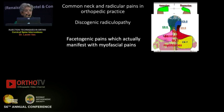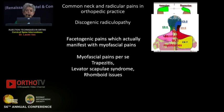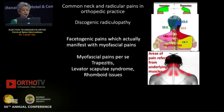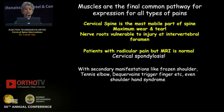These things I have discovered from my experience with patients, though this is what is written in textbooks. Myofascial pains per se — like the dreaded trapezitis, levator scapulae syndrome, rhomboid issues, etc. — their pain referral areas come from the underlying muscles. Muscles are the final common pathway for expressions of all types of pains, and this is a blanket statement after 15 years of pain management.